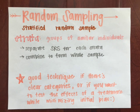This is how to do a stratified random sample. First, classify your population into groups of similar individuals, or strata. Then, do a separate SRS for each stratum and combine them all for your whole sample. This is a good technique to use if you have clear categories within your population or want to test the effects of a treatment while minimizing bias from the initial conditions.